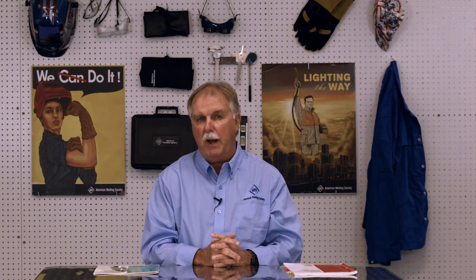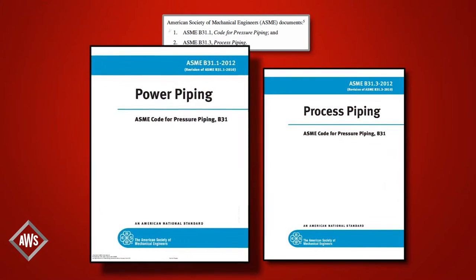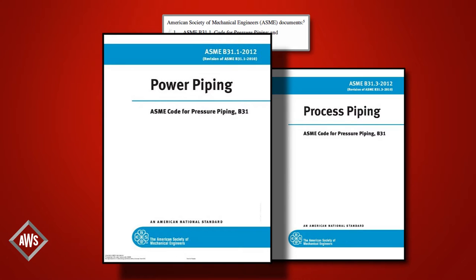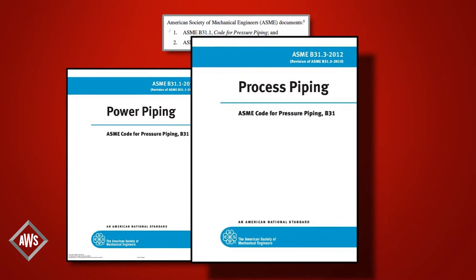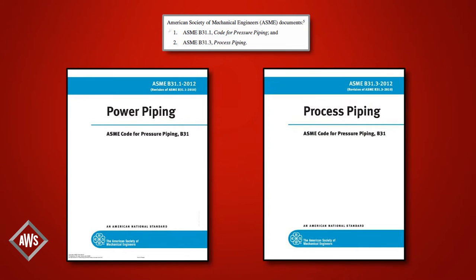Next is the American Society of Mechanical Engineers, or ASME. If you remember from the foreword, the D17.1 code was part of ASME Section 9. The two documents listed here deal with piping: ASME B31.1 is used for pressure piping anything above 300 psi, and ASME B31.3 is used for process piping, which involves a pressure vessel. These documents are listed in numerical order and are most referenced in clause 9, non-flight hardware.